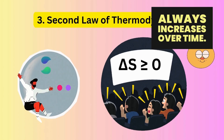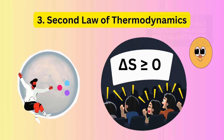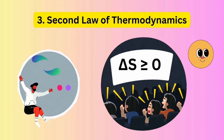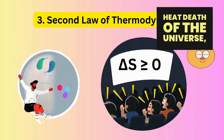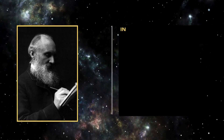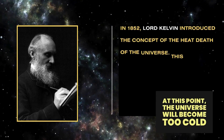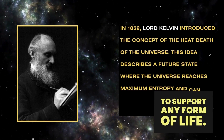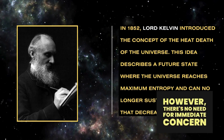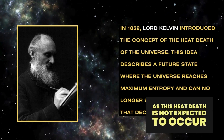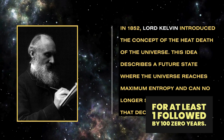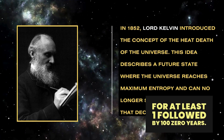The second law of thermodynamics states that the total entropy of the universe always increases over time. This implies that the continuous rise in entropy will ultimately lead to the heat death of the universe, a state of maximum entropy. At this point, the universe will become too cold to support any form of life. However, there's no need for immediate concern, as this heat death is not expected to occur for at least one followed by 100 zeros years.